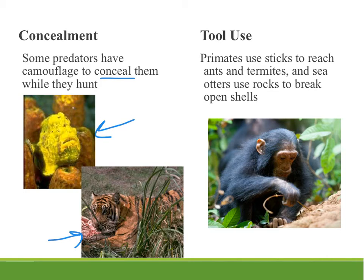Certain types of predators use tools. Primates are very well known for using sticks to collect a tasty snack of insects such as ants or termites. If you poke a stick in their nest, they will swarm out and up the stick, and then a chimpanzee can pick up the stick and just lick the insects off. Sea otters also use rocks balanced on their bellies to break open the shellfish they're having to eat.